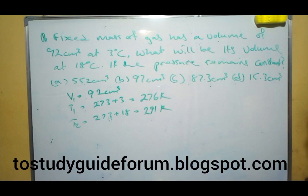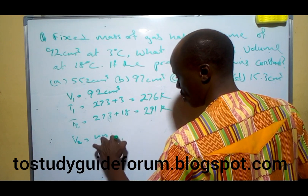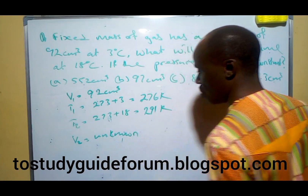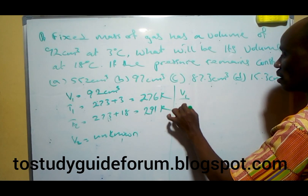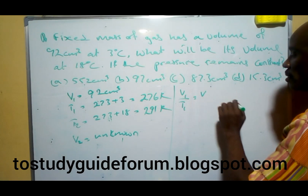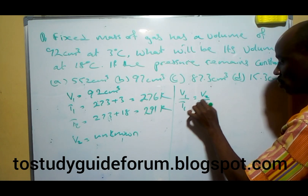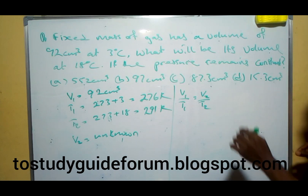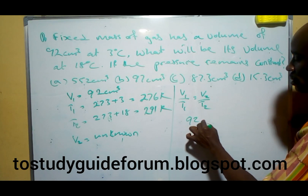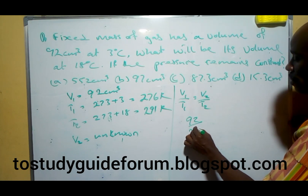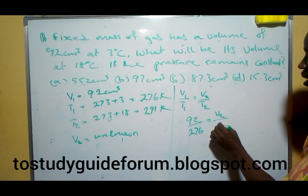So the next thing we are doing here is: V2, the volume, is what we don't know — it's unknown. Using the formula V1 over T1 equals V2 over T2, we are going to substitute. If you substitute, you will have V1 over the temperature equal to the unknown volume V2.